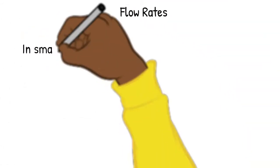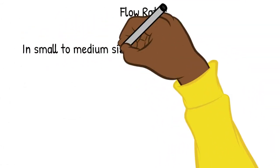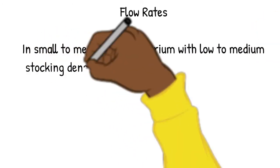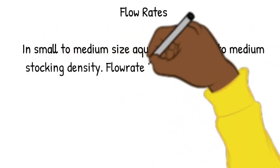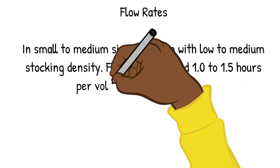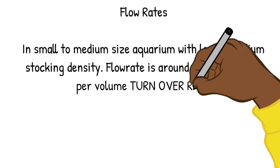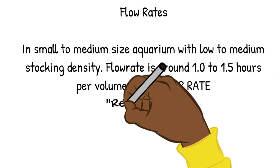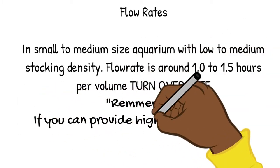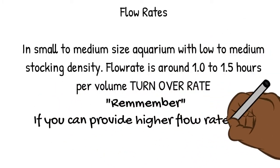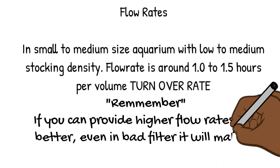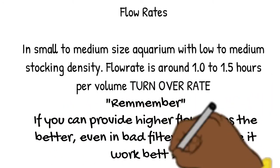For flow rates in a small to medium-sized aquarium with low to medium stocking density, flow rates are around 1.0 to 1.5 hours per volume turnover rate. Remember: if you can provide higher flow rates, the better — even a bad filter will work better with higher flow.